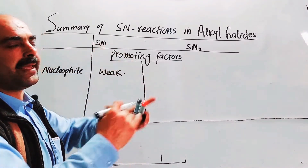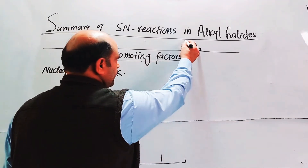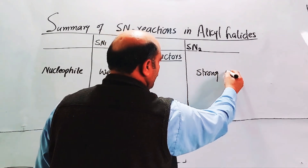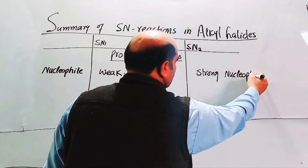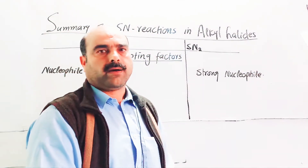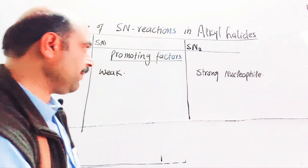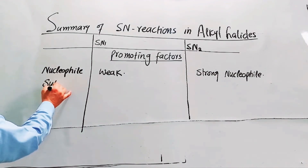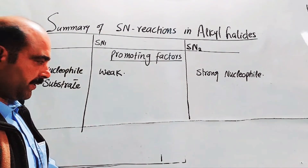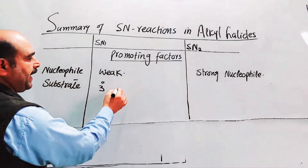For SN1, the promoting factor for the nucleophile is a weak nucleophile — a weak nucleophile promotes SN1 mechanism. For SN2, a strong nucleophile is the promoting factor — a strong nucleophile speeds up the SN2 mechanism.